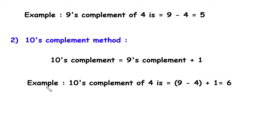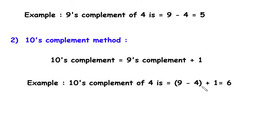For example, the 10s complement of 4: first, 9 minus 4 gives the 9s complement of 4, which is 5. Then adding 1 gives the 10s complement. So it is 9 minus 4 plus 1, which equals 6.